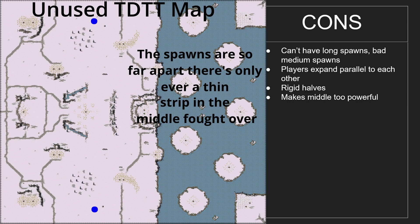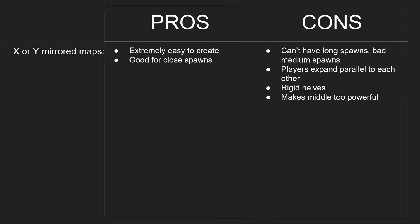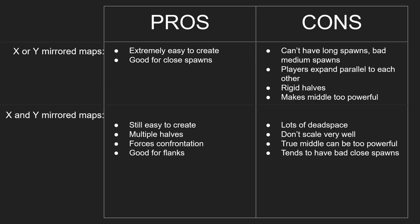That wasted space also makes the middle way too powerful on these maps. It's very common to put ore or a point to control in the exact middle — once you have that you have more than half the map. Expanding parallel isn't terrible on its own, but on these maps you're always expanding parallel and never getting closer to the opponent's base. Going to the middle is too powerful since you just cut the distance in half, and once you control more than half the middle you always will. The last problem is rigid halves — you can't have those fancy yin-yang type map layouts you can achieve with other symmetry types.